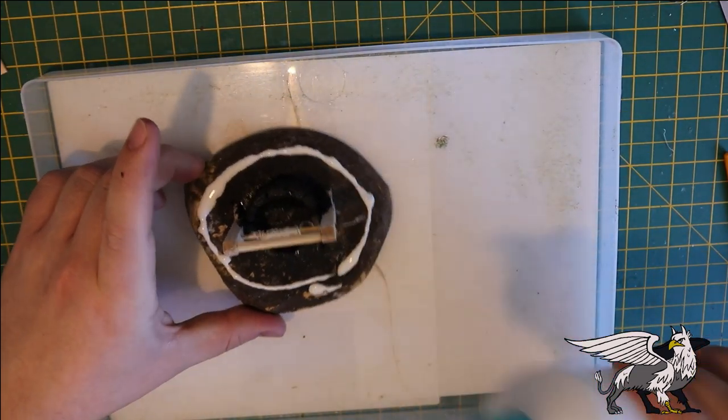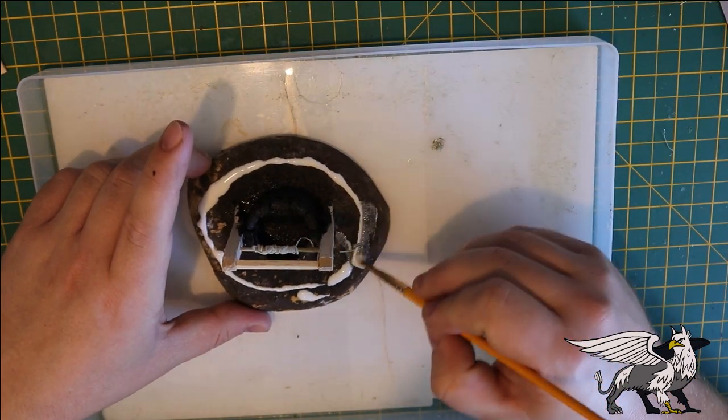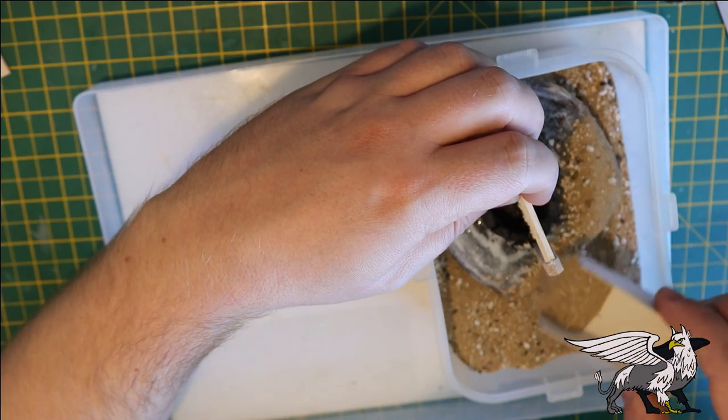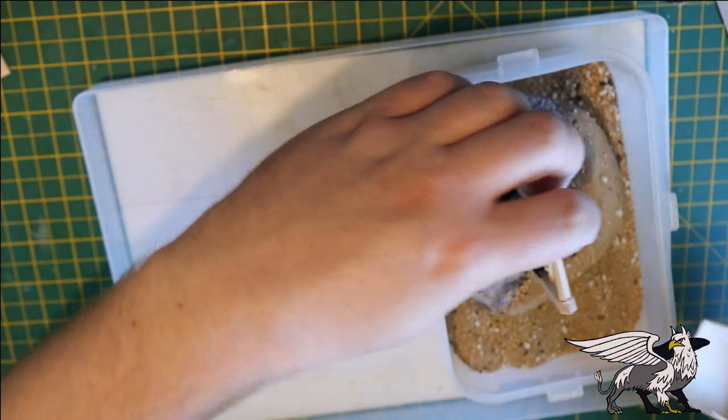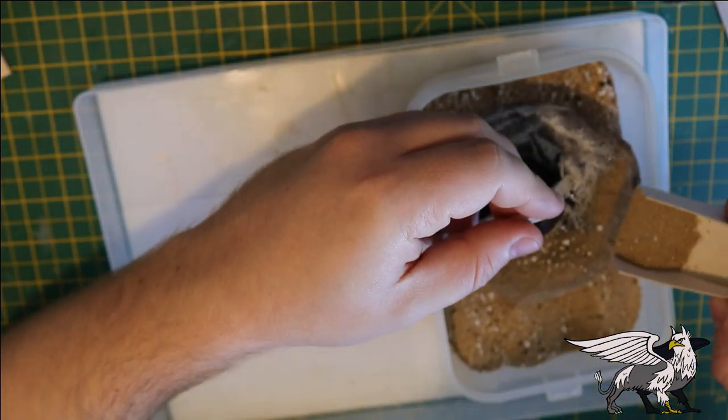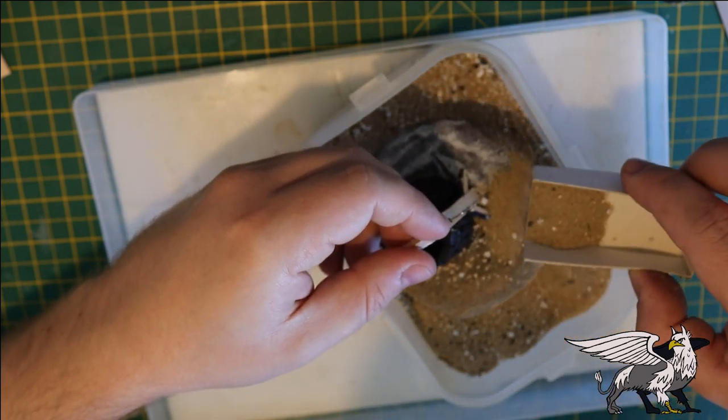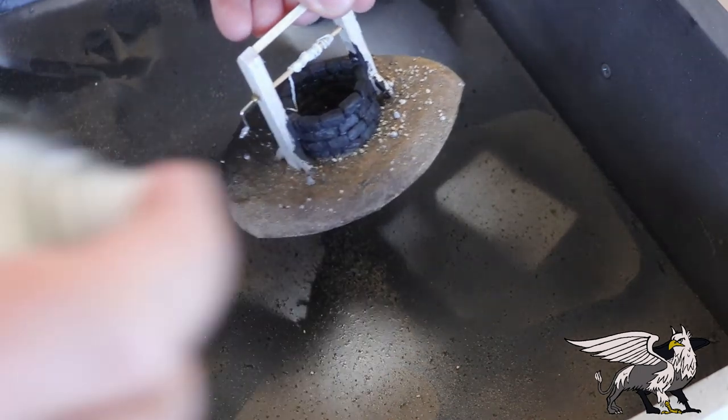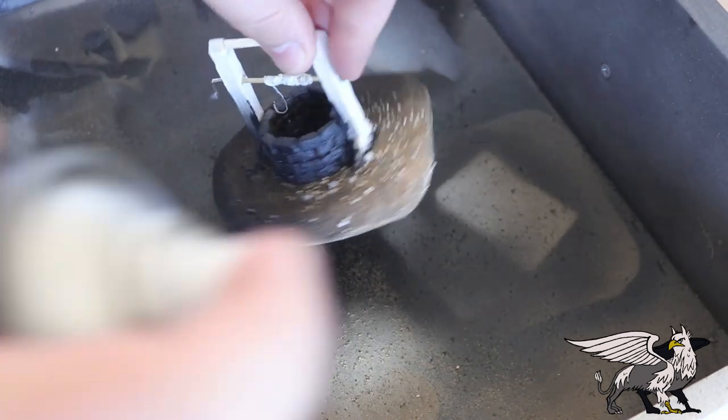Then when that was done, I just placed some PVA glue all the way around the base and covered that in some basing sand to give some texture. And once that was dry, I just undercoated the whole thing in some black primer.